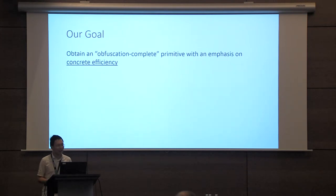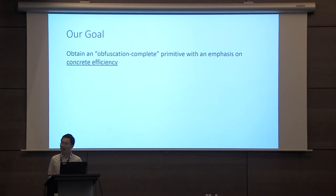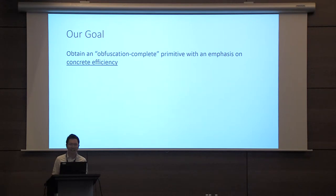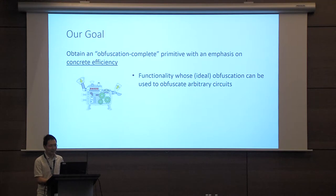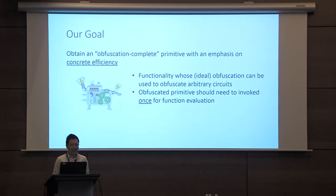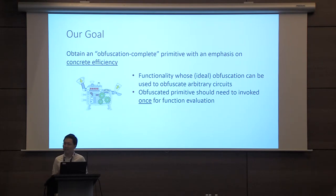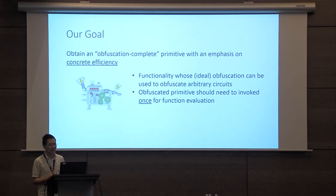Our goal in this project is quite ambitious. We wanted to find an obfuscation-complete primitive that suffices for obfuscating any arbitrary functionality with good concrete efficiency, bringing I.O. into practice. Our goal is to identify a functionality whose idealized obfuscation can be used for general functionalities, and moreover, we want this to be efficient — namely, if you want to obfuscate an arbitrary program, this idealized functionality should only need to be invoked once. So it's sort of this obfuscation-complete primitive: what suffices to obfuscate an arbitrary program?